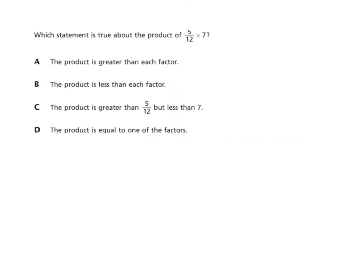Okay, here's another case where some people just like to read things and kind of guess the answers. But we're going to actually do the problem out. Which statement is true about the product of five twelfths times seven? One, the product is greater than each factor. That means the product would be bigger than both of these numbers. The product is less than each factor. That means that the product is going to be smaller than both of those numbers. The product is greater than five twelfths, but less than seven. Okay, so that means our product is between five twelfths and seven. The product is equal to one of the factors. That means the answer is either going to be five twelfths or seven. We need to know these words product and factor.